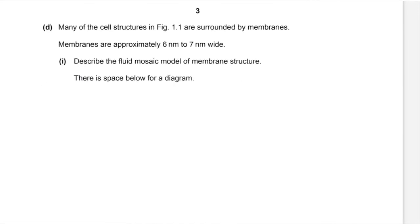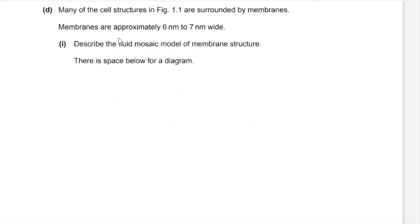Many of the cell structures in figure 1.1 are surrounded by membranes. Membranes are approximately 6 to 7 nanometers wide. Part D: Describe the fluid mosaic model of membrane structure. For the description of fluid mosaic, we describe how the core of the membrane is made up of a fatty acid core, with proteins that are able to move. Because this question is three marks, you'd also mention the key term phospholipid bilayer.